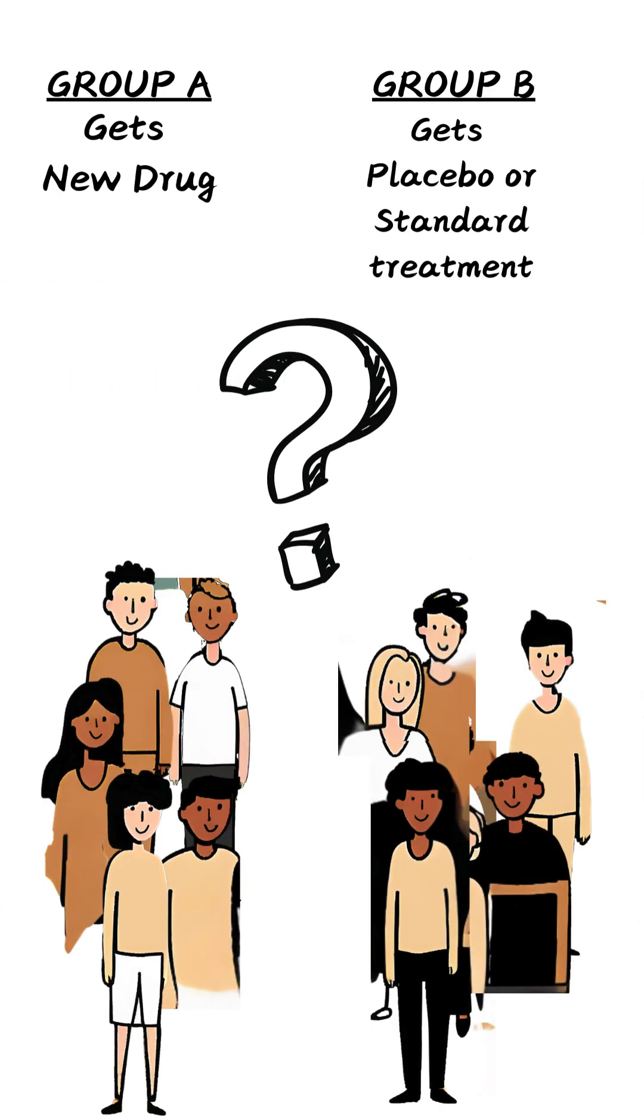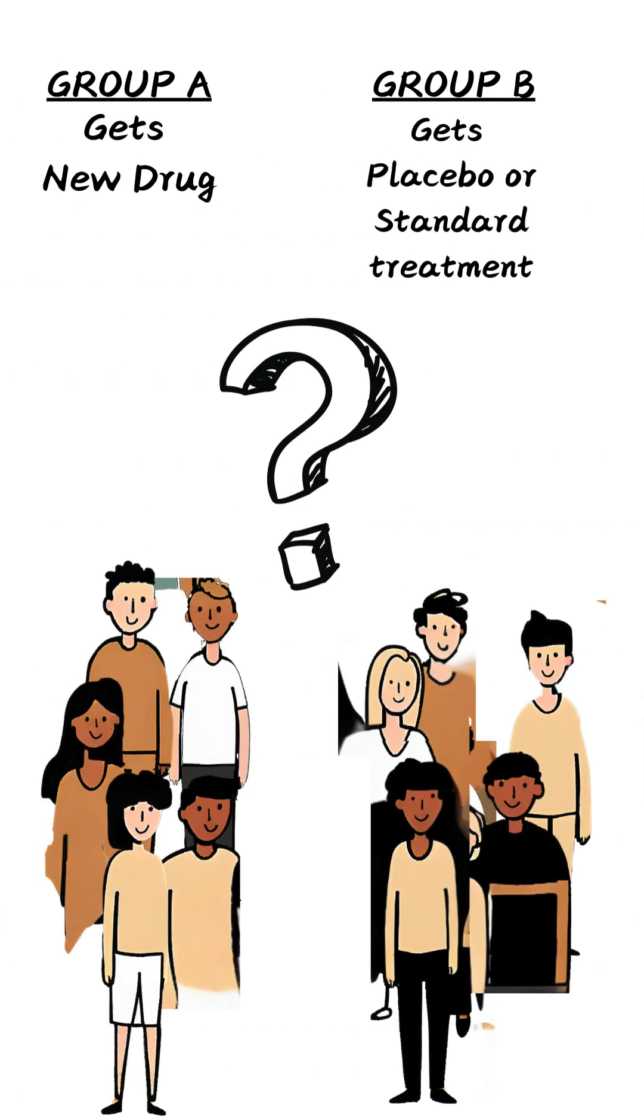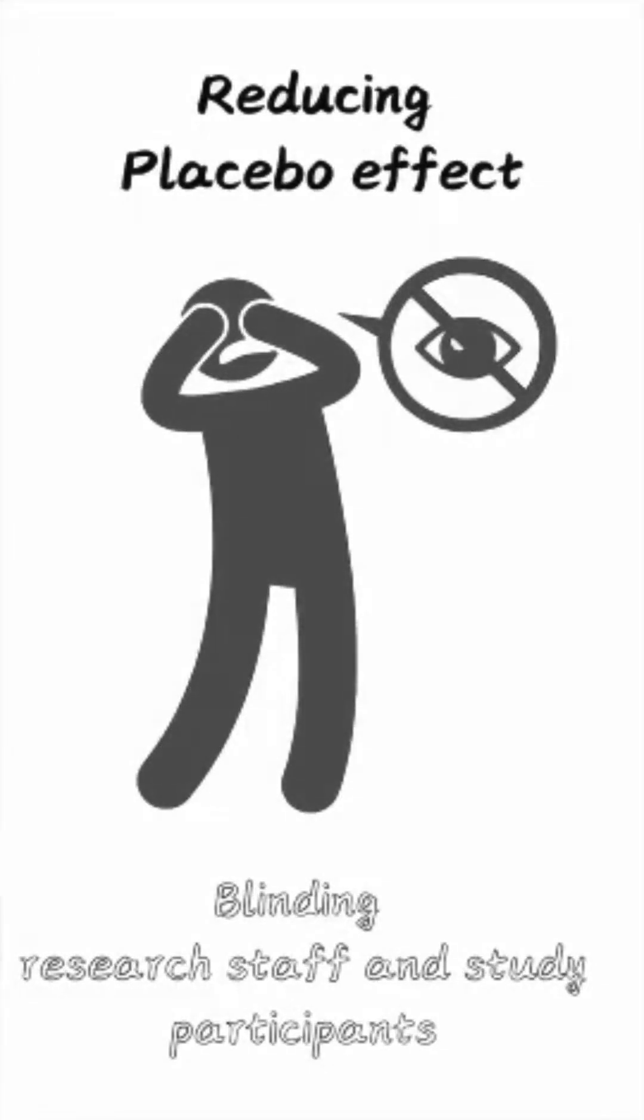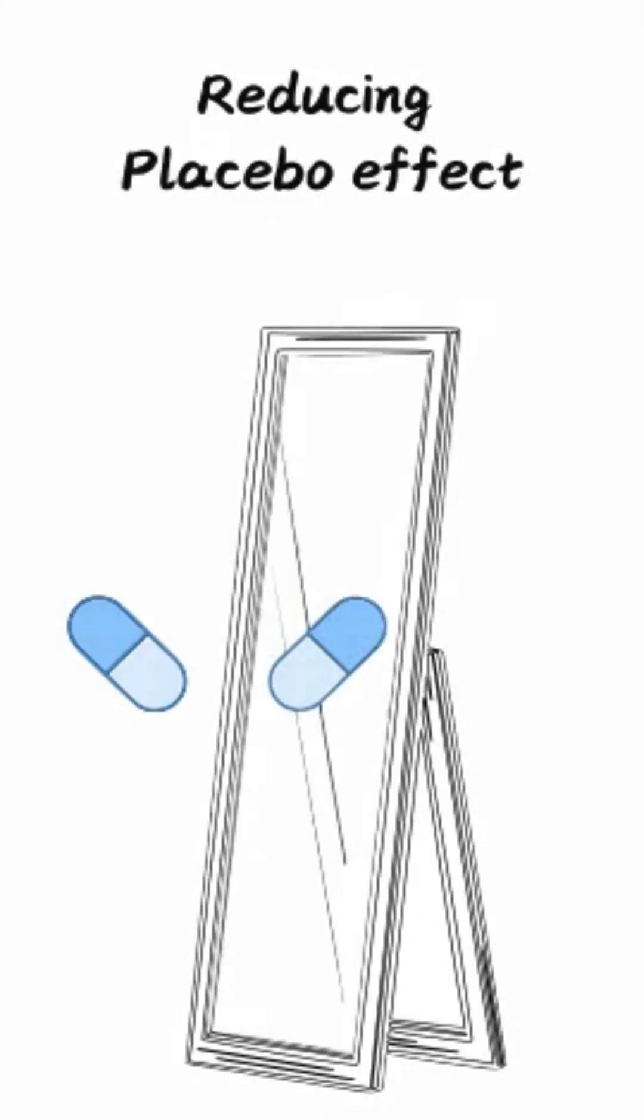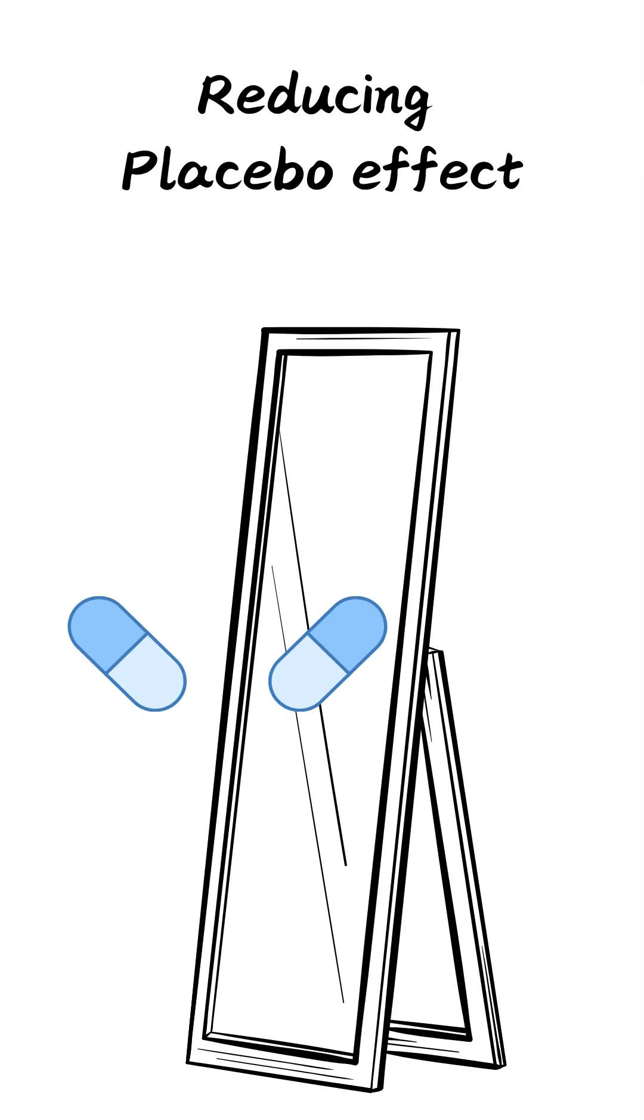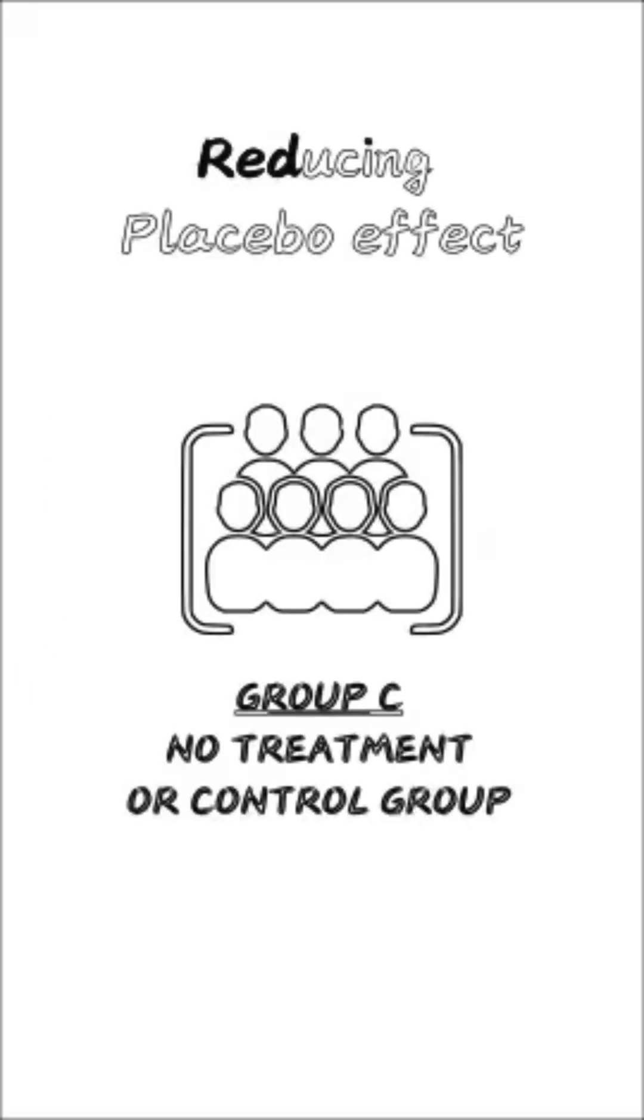To reduce this, researchers use strategies like blinding participants and research staff, designing the placebo to look just like the real treatment, and even adding a no-treatment control group. These steps help reveal the true effect of the intervention.